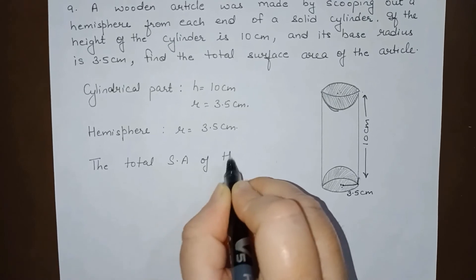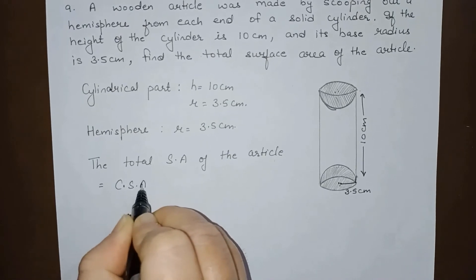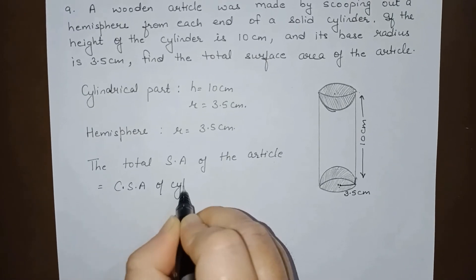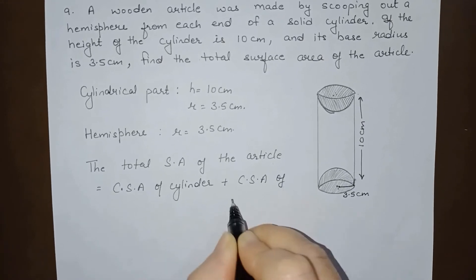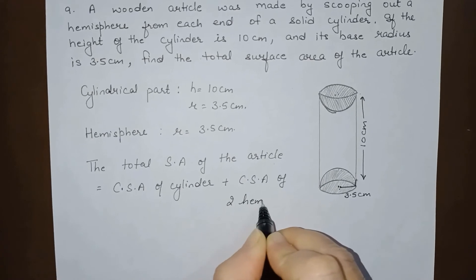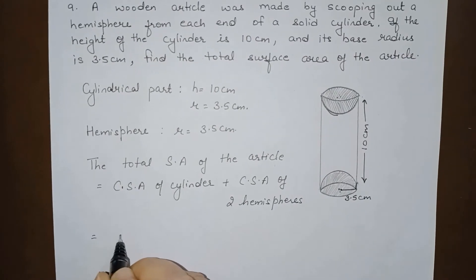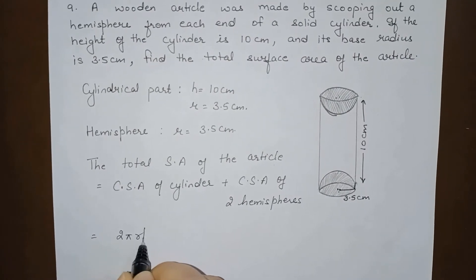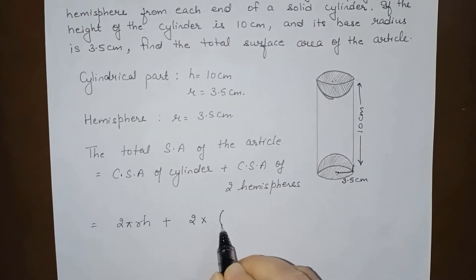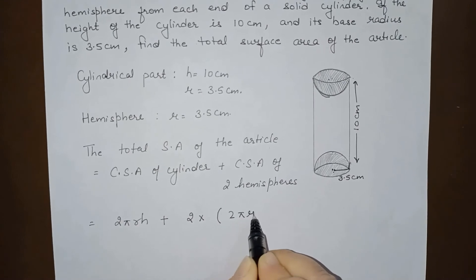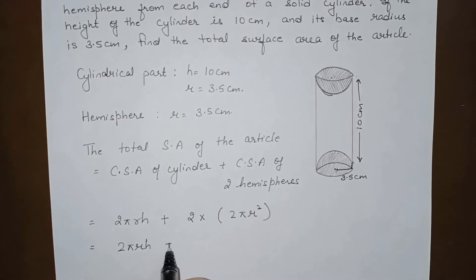So the total surface area of the article—this will be equal to curved surface area of cylinder plus curved surface area of two hemispheres. So this will be 2πrh plus—now curved surface area of two hemispheres—that is 2 multiplied by surface area of one hemisphere. This is the surface area of one hemisphere, so 2πrh plus 4πr².